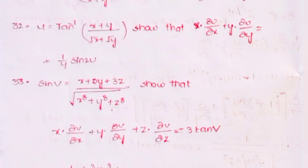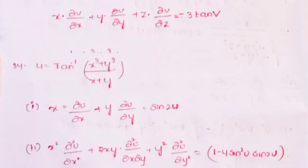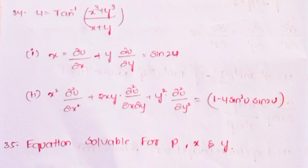Thirty-third, sin v = (x + 2y + 3z) / √(x⁸ + y⁸ + z⁸); show that x·∂v/∂x + y·∂v/∂y + z·∂v/∂z = −3·tan v. Thirty-fourth, u = tan⁻¹[(x³ + y³)/(x + y)]: (i) show x·∂u/∂x + y·∂u/∂y = sin2u; (ii) show x²·∂²u/∂x² + 2xy·∂²u/∂x∂y + y²·∂²u/∂y² = (1 − 4sin²u)·sin2u.